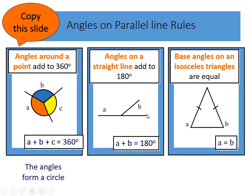Angles on a straight line add to 180 degrees. These are all angles next to each other. These will form a semicircle.